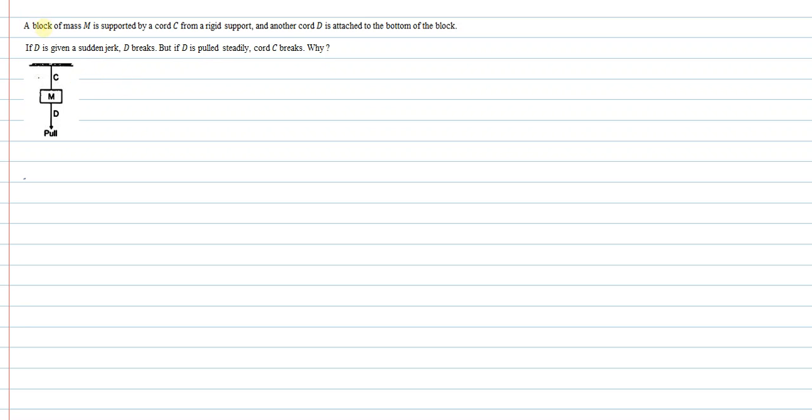Hello students, let's understand this question. A block of mass M is supported by a cord C from a rigid support, and another cord D is attached to the bottom of the block. If D is given a sudden jerk, then D breaks, but if D is pulled steadily, then cord C breaks. Why?